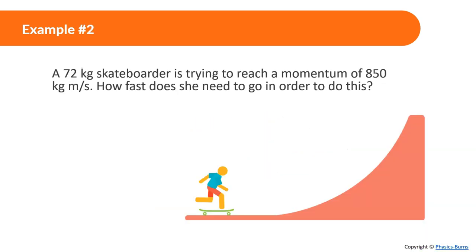Moving on. A 72-kg skateboarder is trying to reach a momentum of 850 kg⋅m/s. How fast does she need to go in order to do this? We know momentum is equal to mass times velocity. However, this time we are looking for how fast, so we're looking for the velocity. Let's manipulate this a little bit. Velocity is equal to momentum divided by mass. Momentum is 850, the mass is 72. Let's see what velocity is equal to. 850 divided by 72, and we get 11.81 meters per second.